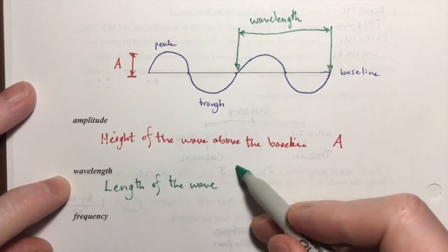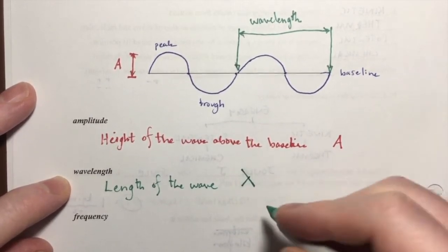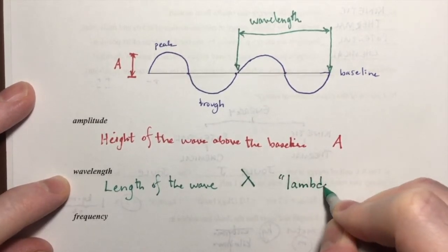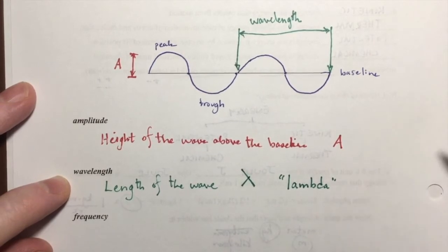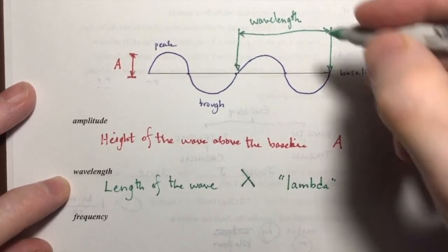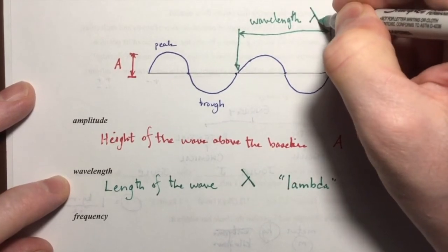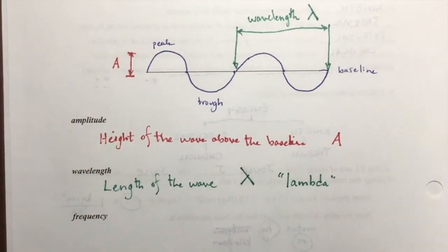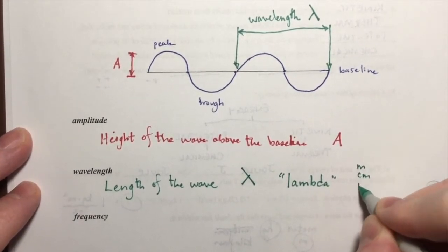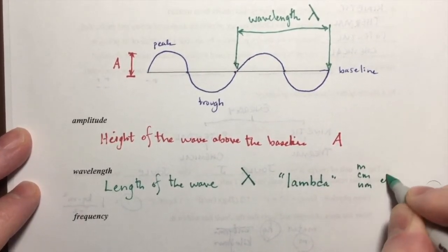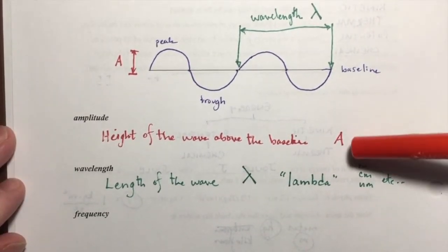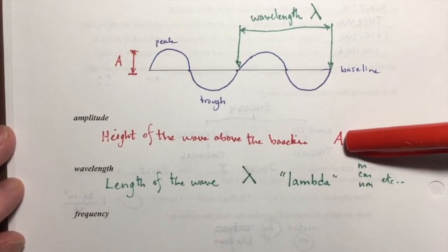The wavelength is represented symbolically with a Greek letter, and it looks like an upside down Y. So it's a small line here and a long line there. And this is called lambda. So that Greek letter is lambda, and that represents the wavelength. And lambda could be measured, the wavelength could be measured in meters or centimeters or nanometers or etc., as long as it's some sort of unit of length, and we're good.